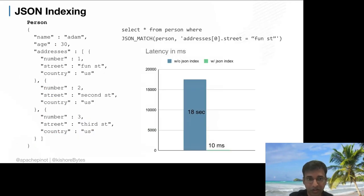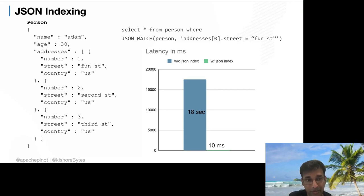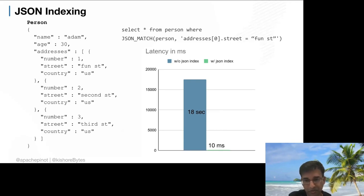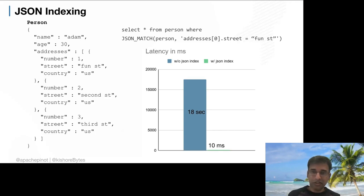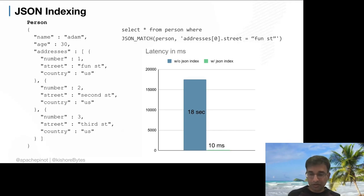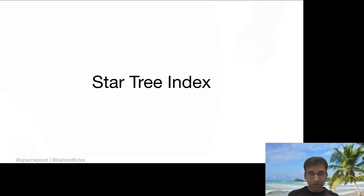A new feature is JSON indexing — Pinot recently added support for unstructured data. Every field in a JSON document gets indexed, enabling queries like 'find someone who lived on Fun Street' to drop from 18 seconds to milliseconds. The syntax uses JSON path expressions: for example, 'addresses[0]' for the first entry, or 'addresses[*]' to match anyone in any address entry. This makes the query syntax very flexible for arbitrary-depth JSON path expressions.